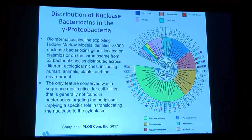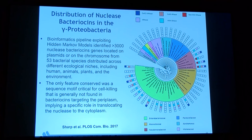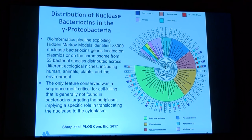How do you find these toxins? They are very often highly diverged in sequence. A paper published last year looked for nuclease-based bacteriocins in gamma-proteobacteria using hidden Markov models and identified over 3,000 different nuclease bacteriocins located on plasmids and chromosomes of 53 bacterial strains. The only conserved feature was the sequence motif critical for self-killing, which is generally not found in bacteriocins targeting the periplasm.